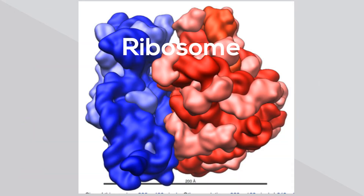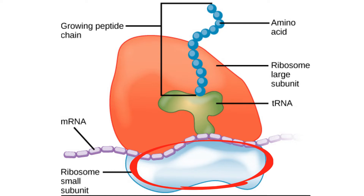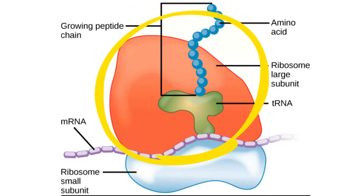Ribosomes are protein-making machines and are made up of rRNA and proteins. Ribosomes consist of two major components: the small subunit, which reads the RNA, and the large subunit, which joins amino acids to form a polypeptide chain.